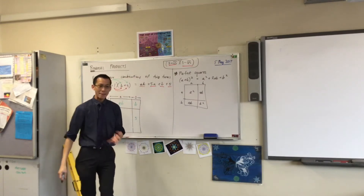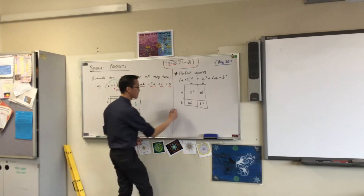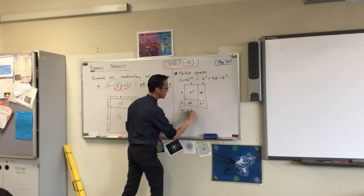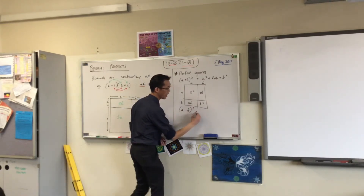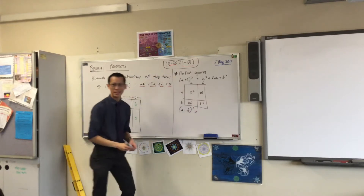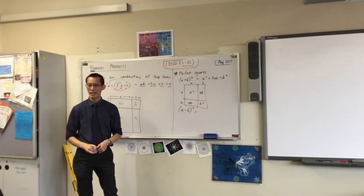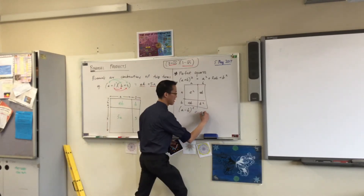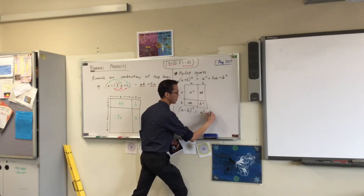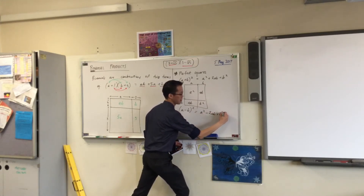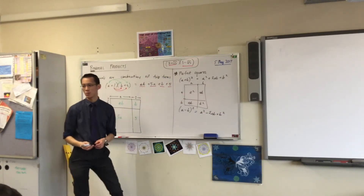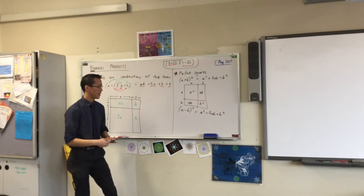In much the same way, you recognize that a minus b, all squared, is going to have the same structure — the only thing that changes is the two ab in the middle.